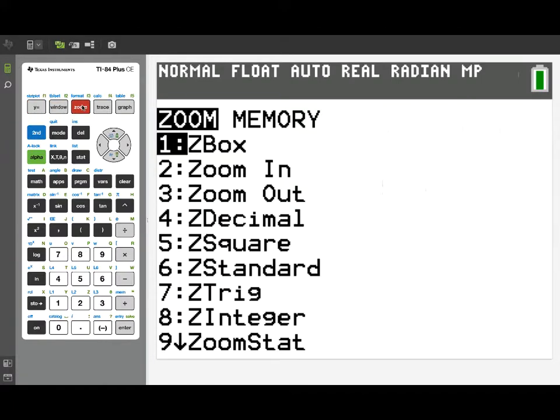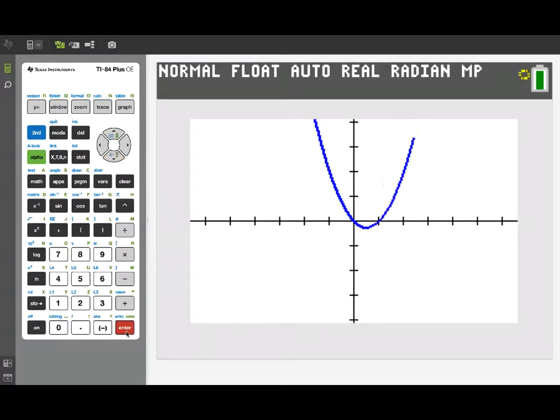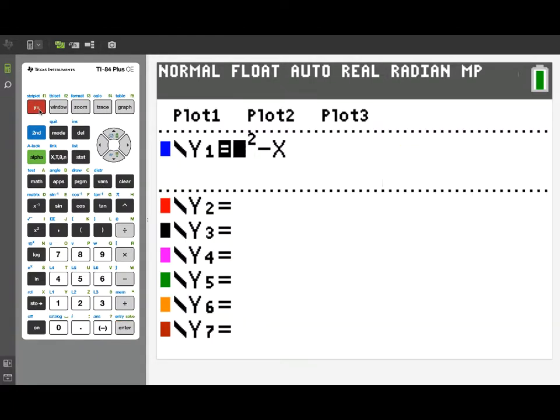The first thing I want to do is just take a look at the graph of the function, and for this I'm going to use the zoom decimal window. I like that window because it uses equal scaling in both the x and y directions, so it's easy to read slopes.